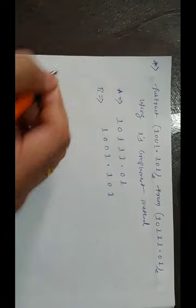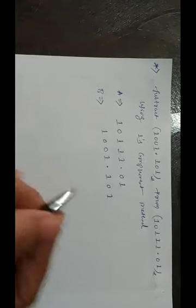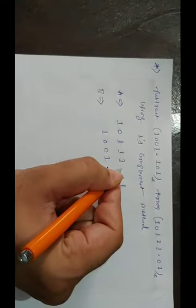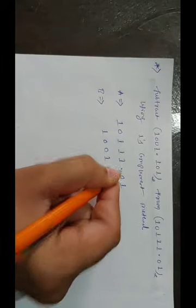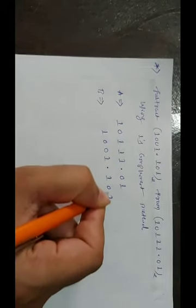Before proceeding to step number 1, we have to make equal number of digits. Look at here. The problem is with the fractional part here, the whole number, and this is the fractional part. First make fractional part equal number.